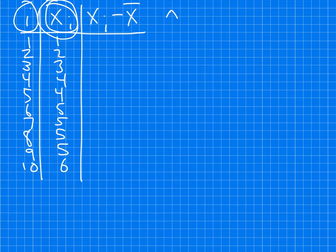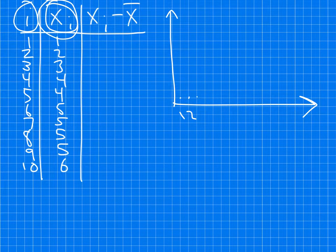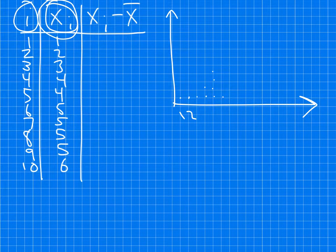We can make a simple graph of these data points. We have one x value at 1, one at 2, one at 3, two at 4, four at 5, and one at 6. You can see the overall shape the data is taking.